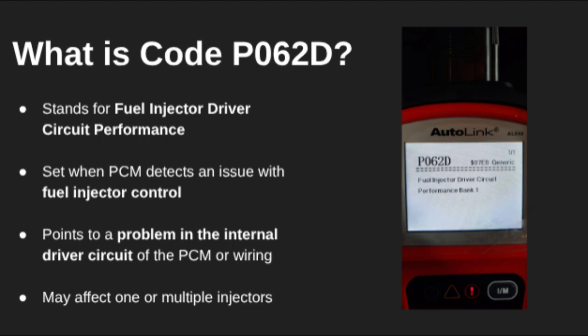Hey everyone, welcome back. In today's video, we're breaking down diagnostic trouble code P062D, Fuel Injector Driver Circuit Performance. This code comes up when your vehicle's powertrain control module, or PCM, detects that it can't properly control one of the fuel injectors. The issue often lies in the internal driver circuit that handles the electrical signal to that injector.